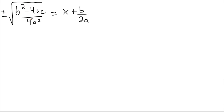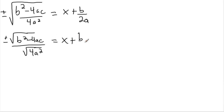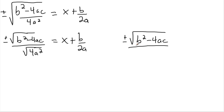Now I can work on the left side a bit. It's hard to break up a square root into different pieces, but I can break it up a little. I can write square root of b squared minus 4ac over square root of 4a squared. The square root of 4 is 2 and the square root of a squared is just a, so I have plus or minus square root of b squared minus 4ac, all over 2a. I no longer have a square root in the denominator.